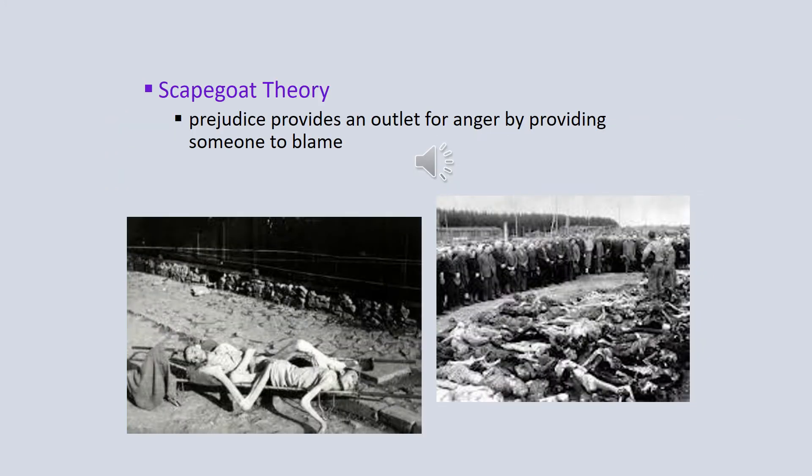A second theory about the cause of prejudice is called the scapegoat theory. Here, people develop negative attitudes when they may be in a bad situation. They're down and out, and they need someone to blame. For example, sometimes you often hear people complaining about immigrants taking American jobs. So people without jobs who are suffering, that is their scapegoat, the immigrants coming in.